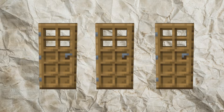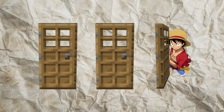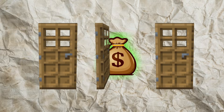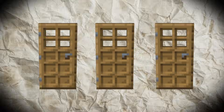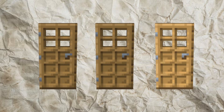Imagine three doors. Behind only one of them is one billion dollars. So choose a door — like actually choose one. For the sake of the visual, we're gonna say everyone chose this door.